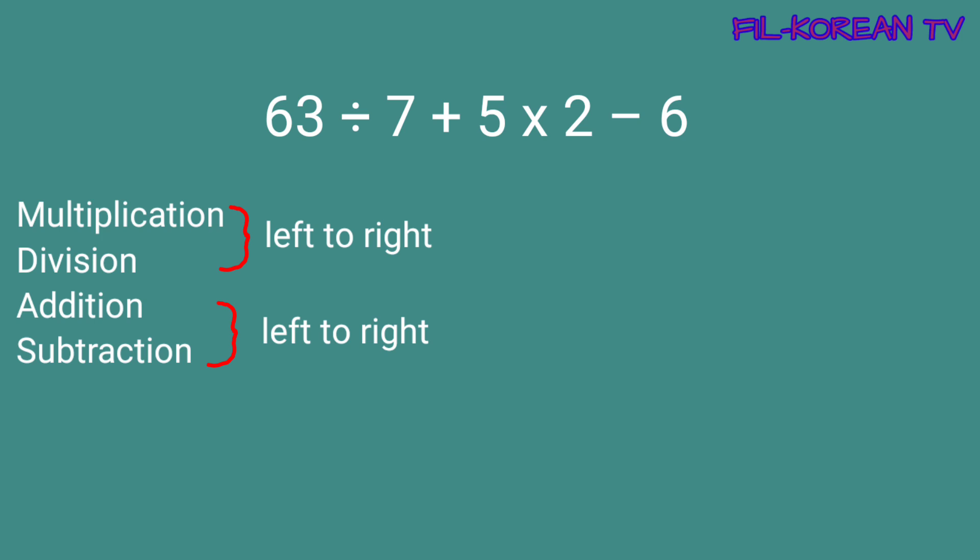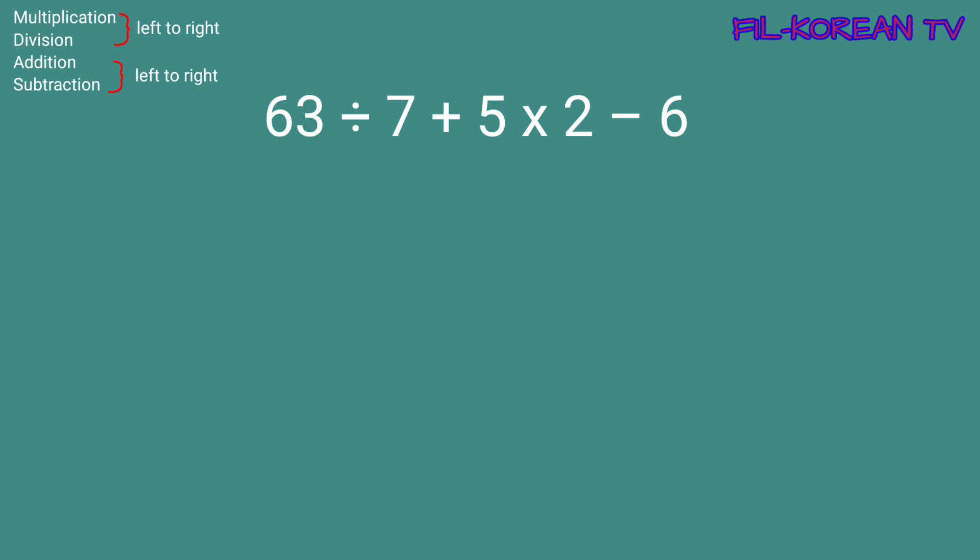Ngayon, isolve natin ang problem gamit ang MDAS rule. Dito sa problem, ang uunahin natin isolve ay itong division at ang multiplication. Dahil hindi naman sila magkasunod, merong addition sa kanilang pagitan, kaya pwede natin isabay kunin ang kanilang answer. 63 divided by 7 equals 9, at itong 5 times 2 equals 10. Kaya yung answer ay magiging 9 plus 10 minus 6.